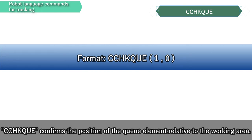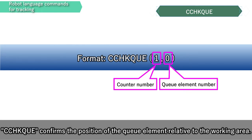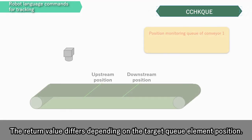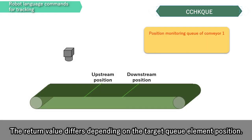C-check queue confirms the position of the queue element relative to the working area. If the queue element number is omitted, the first queue element will be specified as a target. The return value differs depending on the target queue element position.